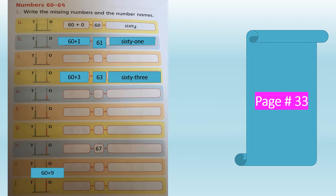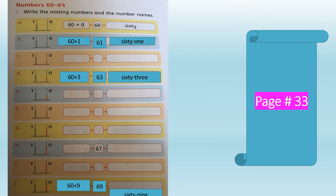Now look at the last part J. There are 9 red beads in the ones rod and 6 green beads in the tens rod. 6 tens and 9 ones makes 69. The number name is S-I-X-T-Y, hyphen or space, N-I-N-E — sixty-nine, 69.